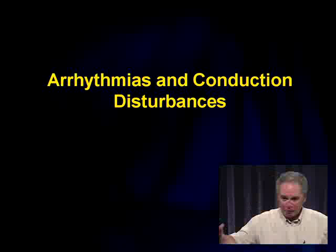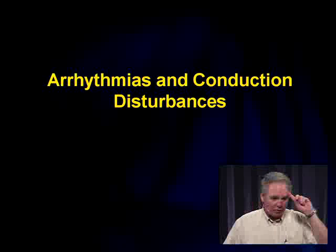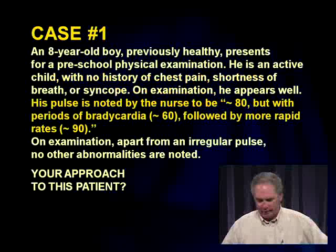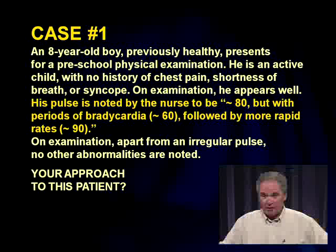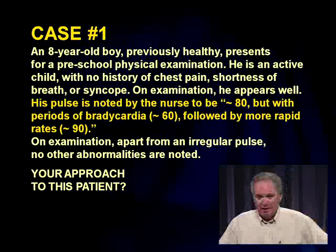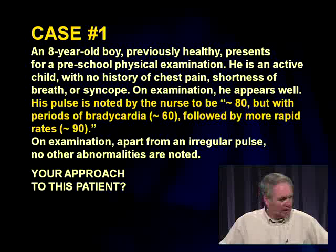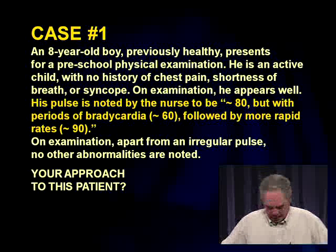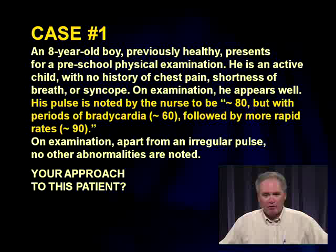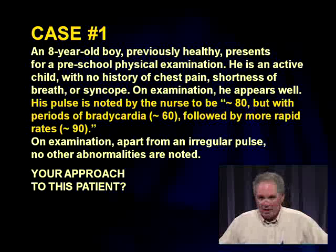Now let's review arrhythmias and conduction disturbances in the pediatric patient. An eight-year-old boy, previously healthy, has an irregular pulse around 80 bpm with periods of bradycardia alternating with more rapid rates. No other abnormalities on exam. This is most likely sinus arrhythmia.